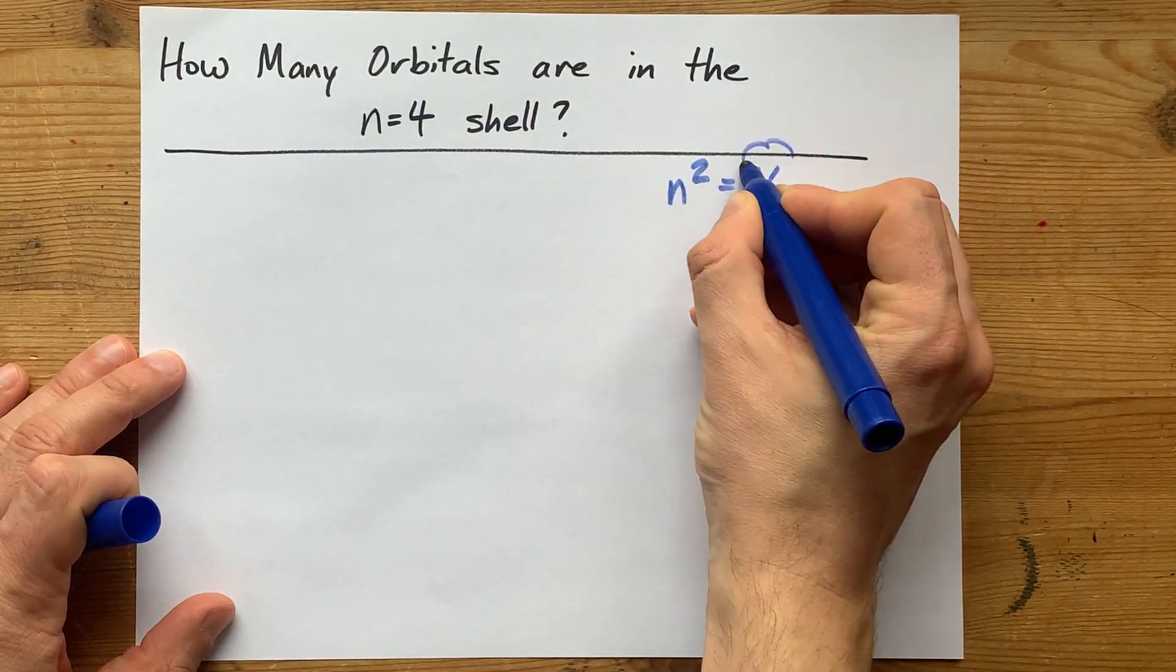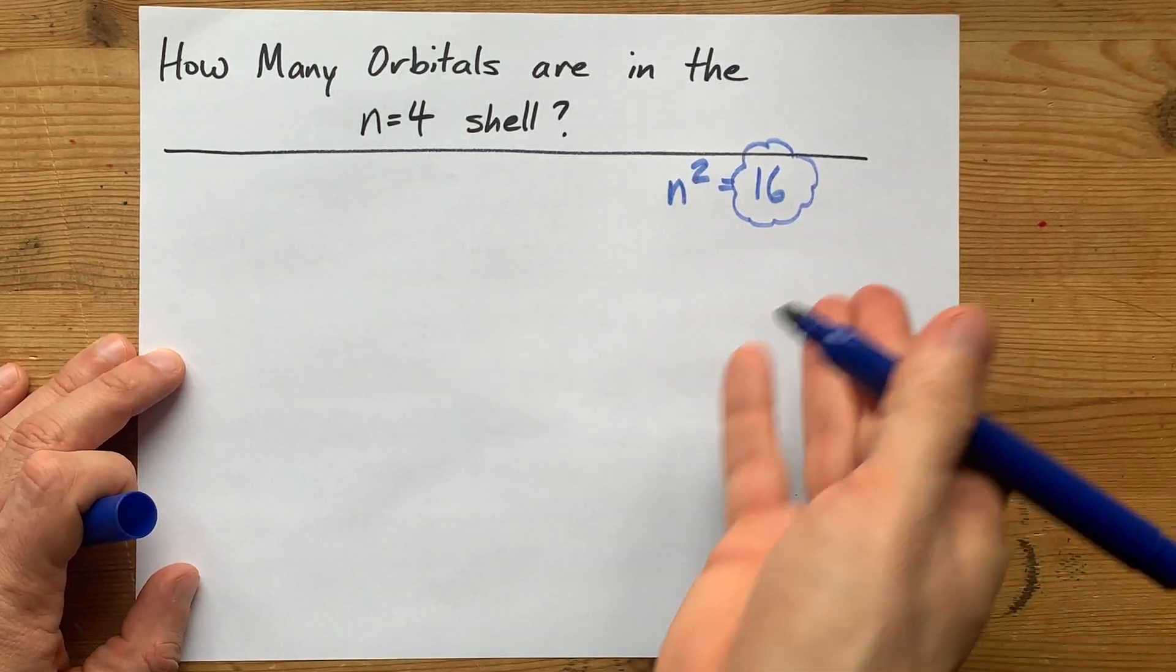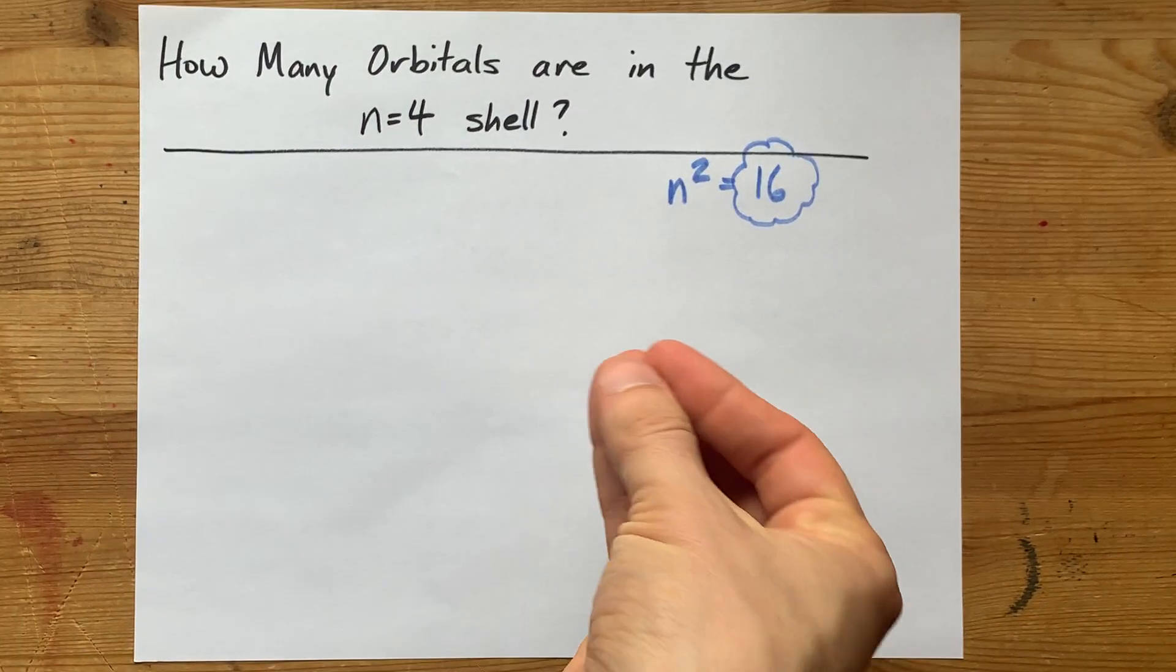The total number of orbitals is going to be n squared. In this case, 4 squared is 16. There's your answer. But let me show you why.